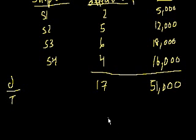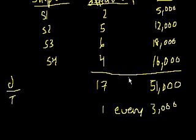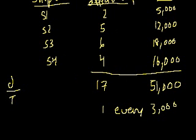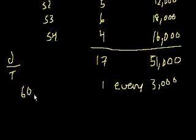So it's 17 for every 51,000 were defective. But actually, 51 is divisible by 17. That's 17 times 3. So if we divide both of these numbers by 17, we can say that one chip for every 3,000 is defective if we take shipments S1 through S4 combined.